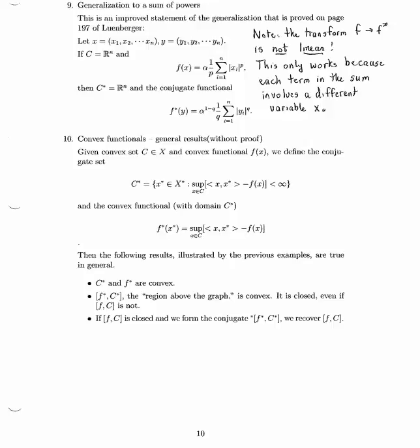And when we calculate the conjugate functional, we end up doing the computation of the supremum independently for each of these variables. And therefore, the answer is just the sum of the terms we got by the formula on the previous page. It's alpha to the 1 minus q times 1 over q times the sum of the absolute value of yi to the q.